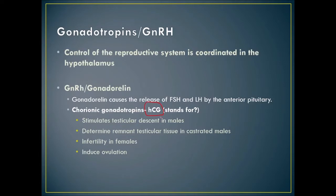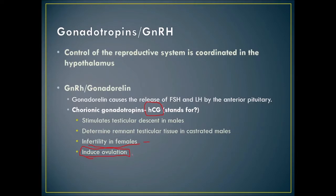HCG can stimulate testicular descent in males, so we can use it for a cryptorchid male. It can also help determine remnant testicular tissue in a castrated male exhibiting unexpected behavior. It can also cause infertility as a birth control device — it induces ovulation but then stops further ovulation or estrus. We might use HCG in cows to stimulate ovulation and synchronize cycles so all calves are born at once.